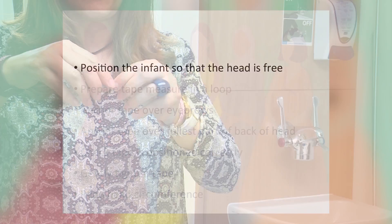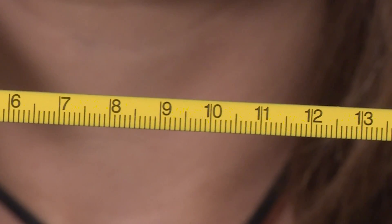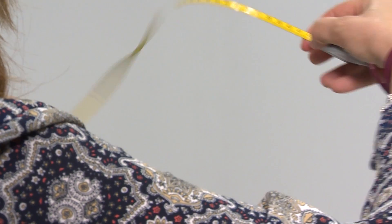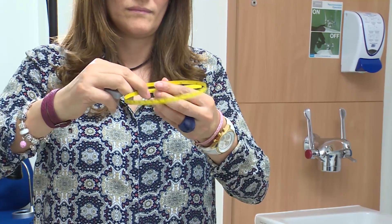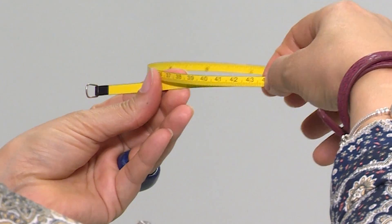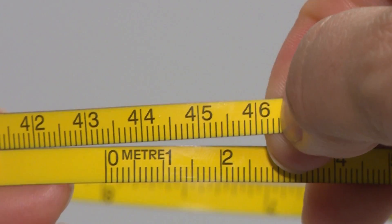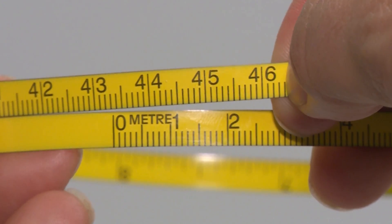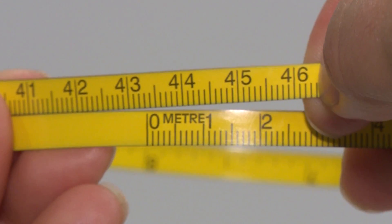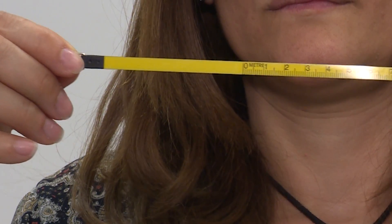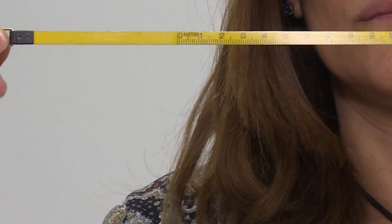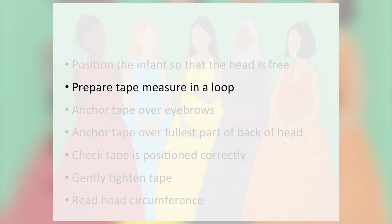The measurer uses a tape measure with the measurement unit in centimetres and millimetres. Before putting the tape measure around the baby's head, the measurer should loop the tape. The end with the zero should be placed under the other end to create a continuous line across the tape and ensure precision of measurement. You may need to adjust this technique if the tape endings are different. The loop should be a little bigger than the size you expect the baby's head to be.